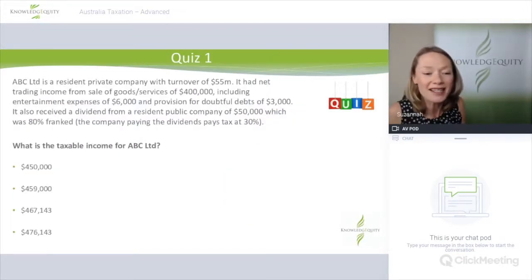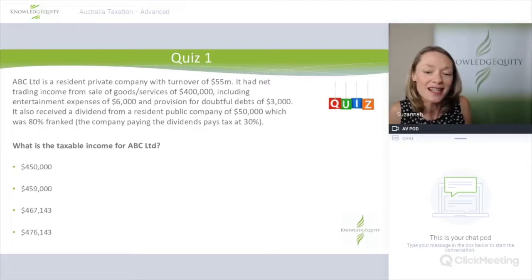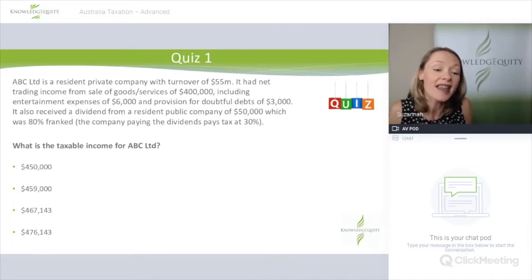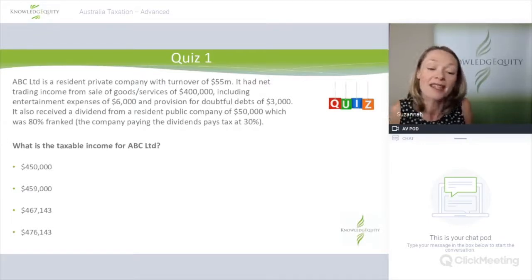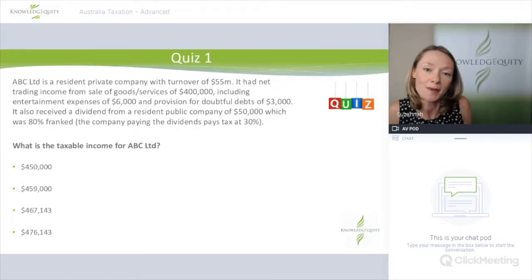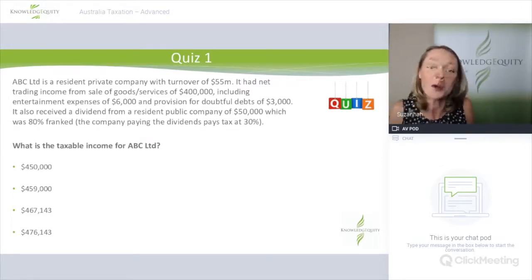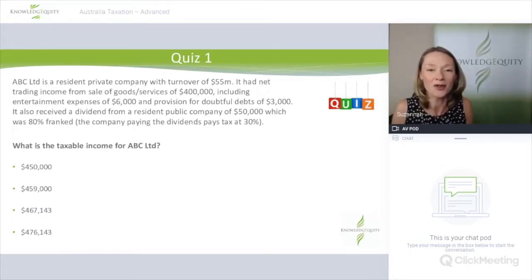Let's break things up with a quiz. ABC Limited is a resident private company with a turnover of $55 million. It had net trading income from sale of goods and services of $400,000, including entertainment expenses of $6,000 and a provision for doubtful debts of $3,000. It also received a dividend from a resident public company of $50,000, which was 80% franked, and the company paying the dividends pays tax at the 30% rate. What is the taxable income for ABC Limited? Please pause the video and try to work it out yourself.